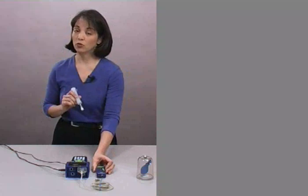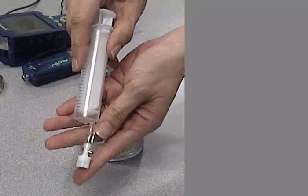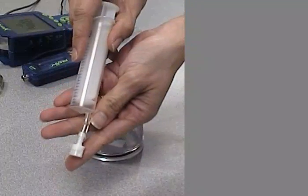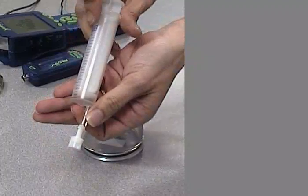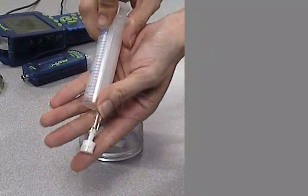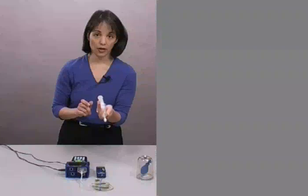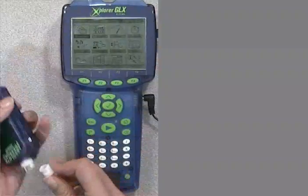If you're going to do this activity, the setup is very easy. All you need to do is cut off about a centimeter of the tubing, put one end on the syringe and one of these quick connects on the other end. Pull the syringe out to 20 milliliters and then connect it to your pressure sensor.